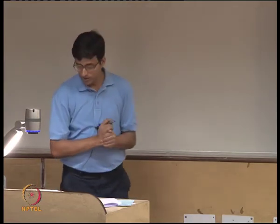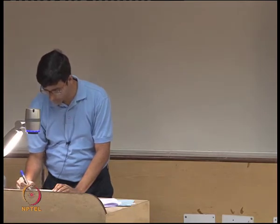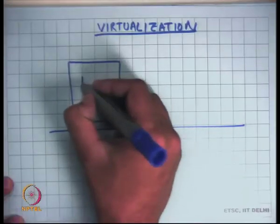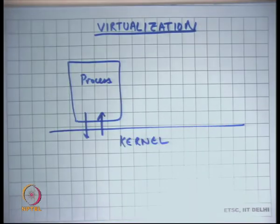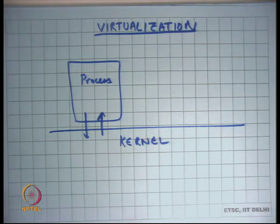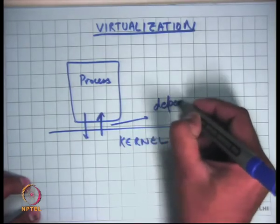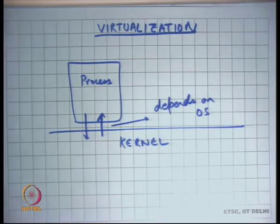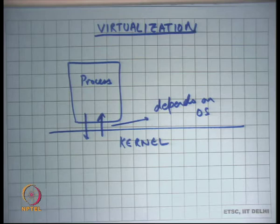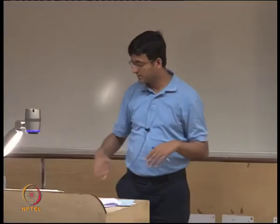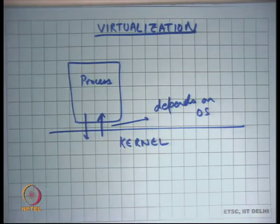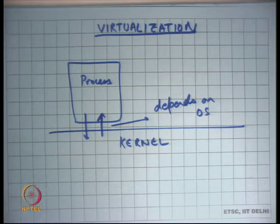Let us talk about virtualization. So far, we saw that there was a kernel and then there was a process, with an abstraction between them designed so the process can do what it wants safely. This abstraction depended on the OS — for example, Windows will have a different abstraction from Linux, and Linux version 2.2 will have a different abstraction from Linux 3.0. These abstractions are relatively very fluid, making it difficult to take a process that would run on Linux 3.0 and make it run on Linux 2.2, and even more difficult to take a process from Windows and make it run on Linux.